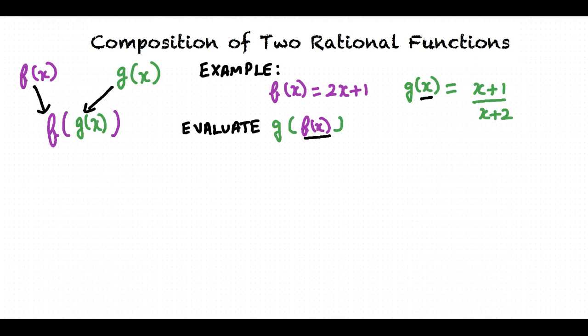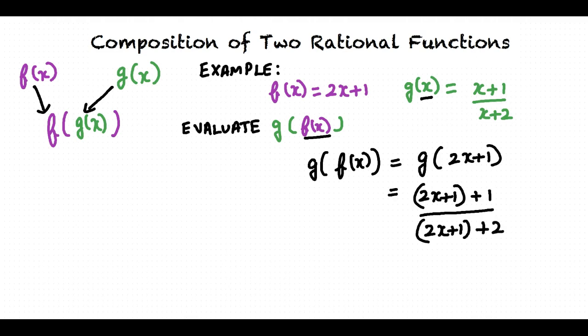Thus, in order to evaluate g of f, we substitute f for x in the g function. g of f equals g of 2x plus 1, since f equals 2x plus 1. This means we substitute 2x plus 1 for x in the g function. The expression now becomes 2x plus 1 plus 1 over 2x plus 1 plus 2, which equals 2x plus 2 over 2x plus 3.